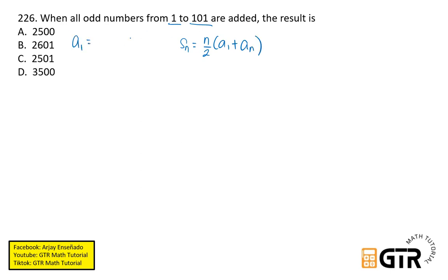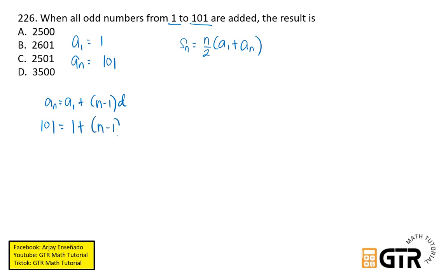Our a sub 1 here is the first term, which is 1, and our last term is 101. We don't know n yet, so let's solve for it. To get the value of n, we use the formula a sub n equals a sub 1 plus (n minus 1) times d. Since these are odd numbers — 1, 3, 5, 7 — the common difference d is 2.